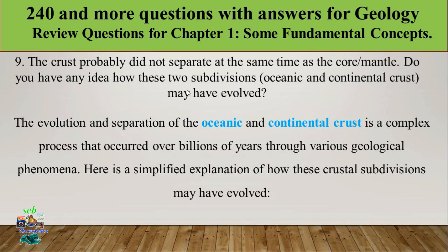Question number nine: how did the two crust subdivisions — oceanic and continental crust — evolve? The crust has two parts: continental crust and oceanic crust. Their separation and evolution is a complex process, unlike the simultaneous core-mantle separation.